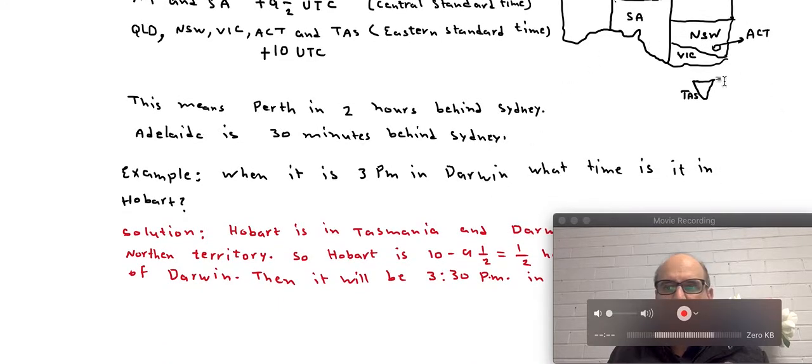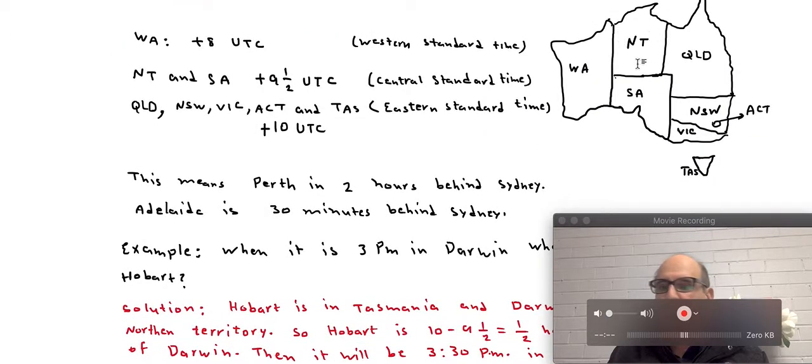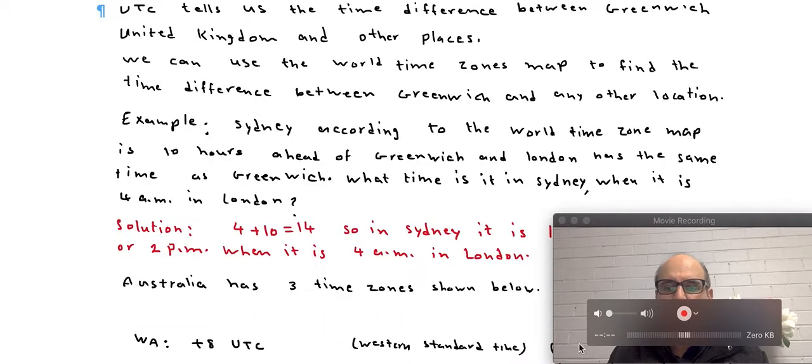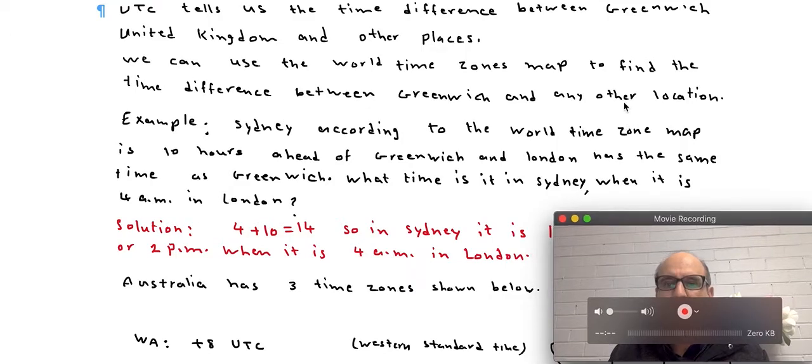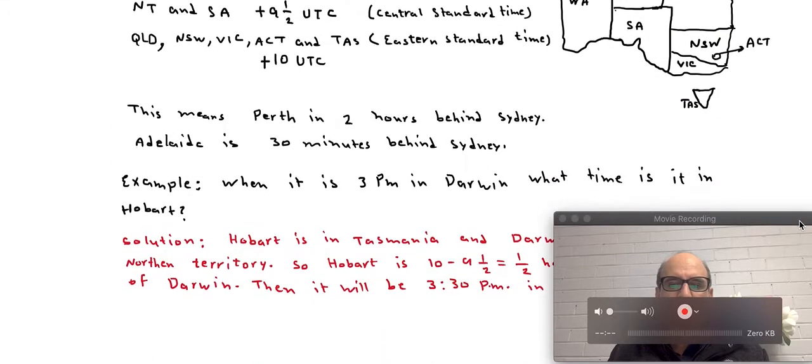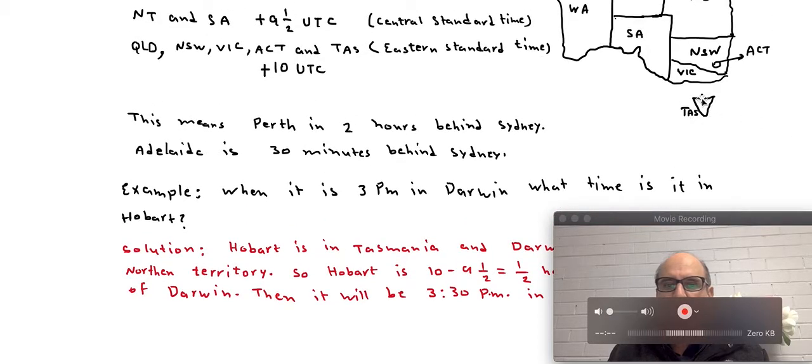Okay, Darwin is part of Northern Territory which follows the Central Standard Time. So what we have here is 9 and a half hour ahead of Greenwich. Then Hobart is part of Tasmania which follows the Eastern Standard Time and it is 10 hours ahead of Greenwich.